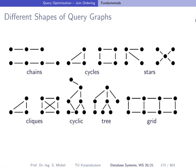Assuming we do not allow cross products, the predicates constituting the edges of the query graph give the graph a specific shape. For instance, in the previous example with students, attend, lectures, and professors, the query graph forms a chain — we go from students over attend and lectures to professors. This is called a chain query because the query graph looks like a chain.